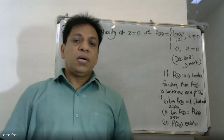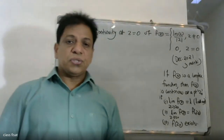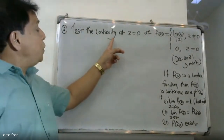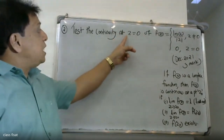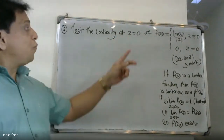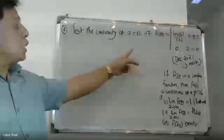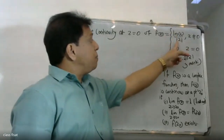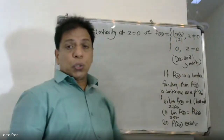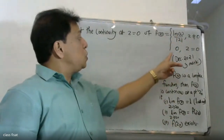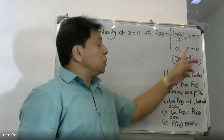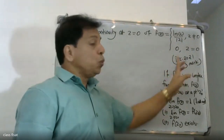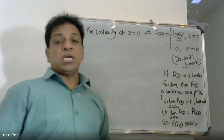Good morning students. The question is: determine the continuity at z equal to zero of f of z, which is equal to the imaginary part of z divided by mod z, when z is not equal to zero, and f of zero is equal to zero.